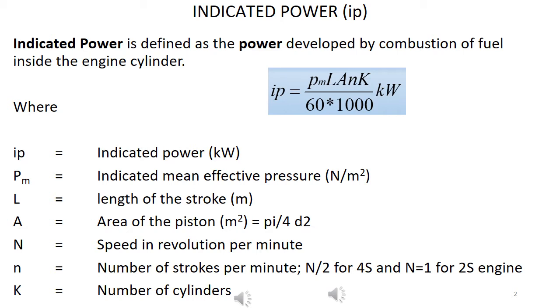Where PM is mean effective pressure in Newton per meter square. L is the length of the stroke in meter. A is the area of the piston in meter square, which is equal to pi by 4 d square, where d is the diameter of the piston. N is the number of revolution per minute, where n is the number of strokes per minute. For 4 stroke, it is n by 2, and for 2 stroke, it is n equal to 1, and k is the number of cylinders. For remembering the IP, IP equals plant by 60,000 into k.